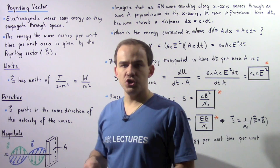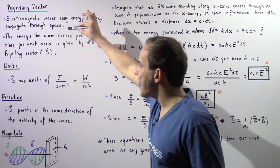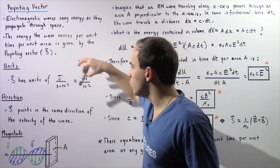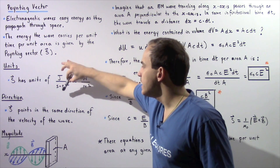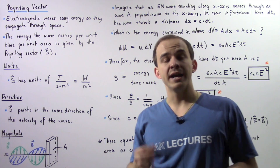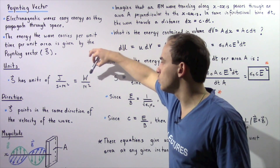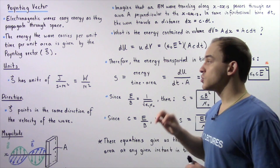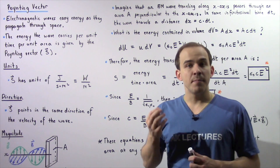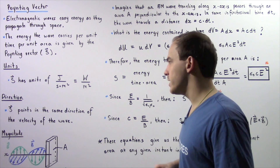The units of the Poynting vector follow from its definition as energy per unit time per unit area, giving us joules per second per meters squared. Since joules per second is simply power in watts, the units are also watts per meter squared. So another way to interpret the Poynting vector is as the power transported by an electromagnetic wave per unit area.